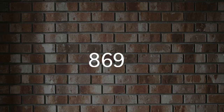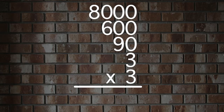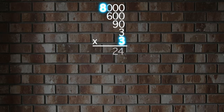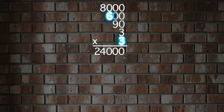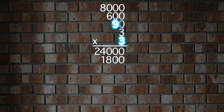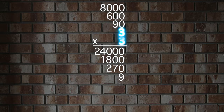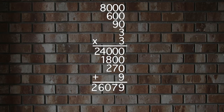Let's try another one: 3 times 8,693. 3 times 8 is 24, so 24,000. 3 times 6 is 18, so 1,800. 3 times 9 is 27, so 270. And 3 times 3 is 9. Add them up — 26,079.